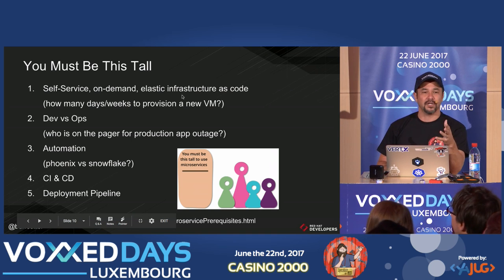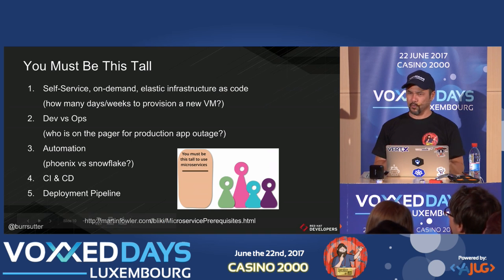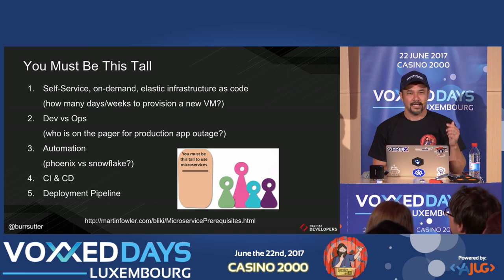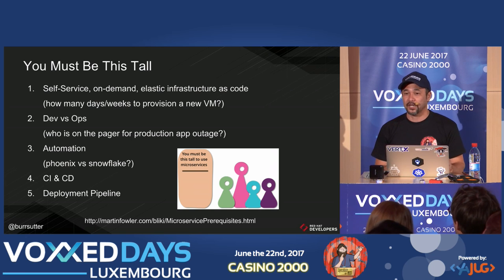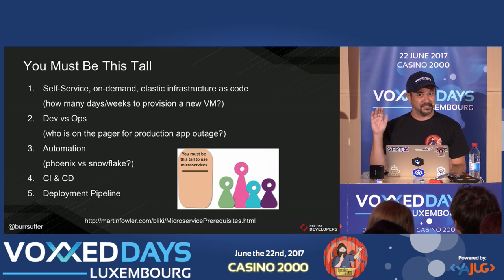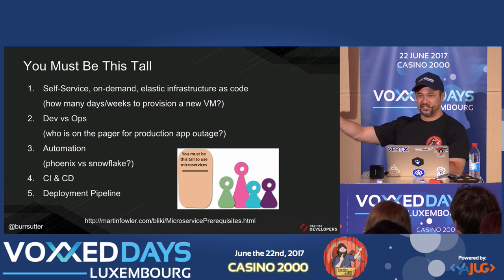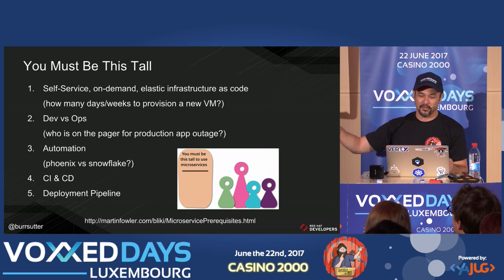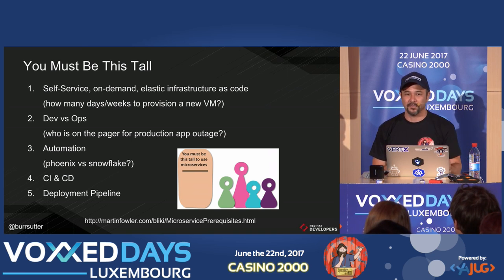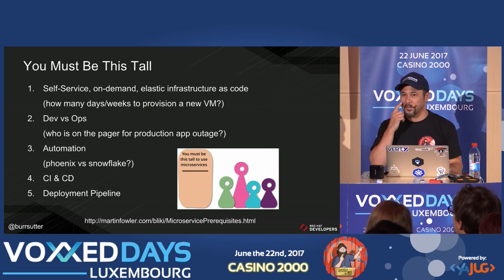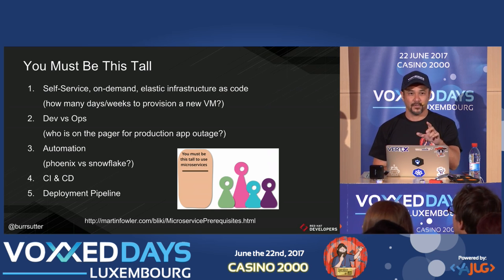If you want to do microservices, which everybody seems to want to do, this is a point by Martin Fowler: you need to be this tall. You must have certain capabilities and characteristics before you're ready for microservices. You need to think about self-service, on-demand, elastic infrastructure. If it takes you three weeks to get a VM provisioned, you have a problem. I've had audience members tell me it's five weeks, six weeks — I was recently in a federal government setting where they laughed and said it's six months.